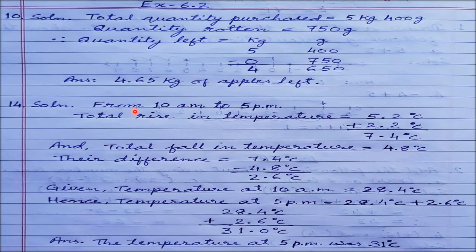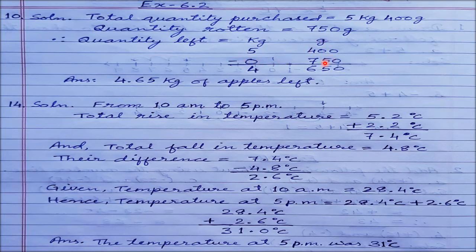When he reached home he found that 750 grams of apples were rotten. Find the quantity of apples left with him. Write your answer in decimals. So he purchased in the beginning — total quantity purchased: 5 kg 400 grams of apples. After reaching home he found some apples were rotten — quantity rotten: 750 grams.